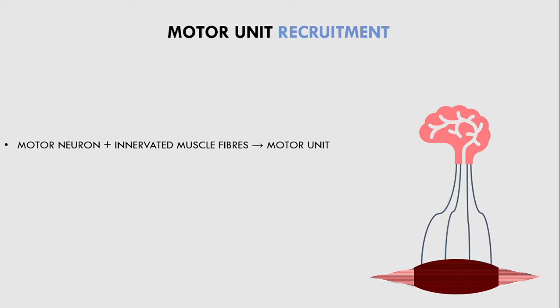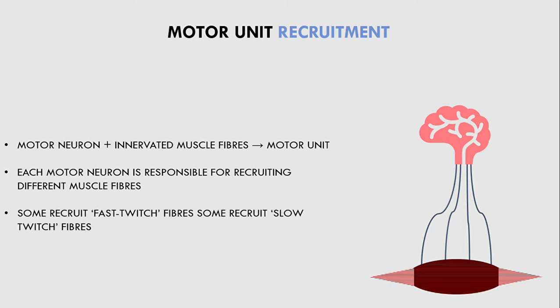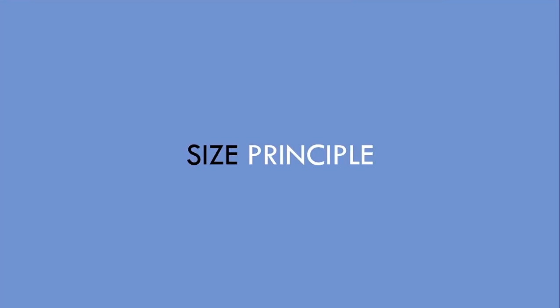However, each motor neuron innervates different types of muscle fibers, meaning that some innervate larger and stronger fibers usually called fast twitch muscle fibers, while others innervate the smaller and weaker fibers usually called slow twitch muscle fibers. This leads us to the size principle.